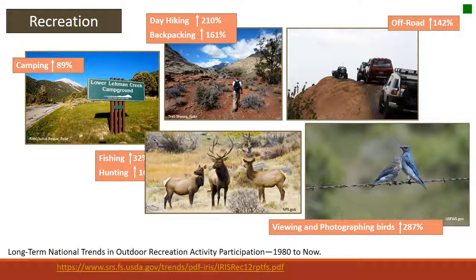Recreation is definitely not going away. Looking at long-term national trends in outdoor recreation from 1980 to now, recreation is not decreasing in any surveyed category. Camping has increased by 89% from the early 1980s, bird watching and photographing birds has increased by 287%, and fishing, hunting, off-road vehicles, day hiking, and backpacking have all increased. We have to take advantage of this upward trend and manage for it, considering the social, economic, and ecological factors involved.